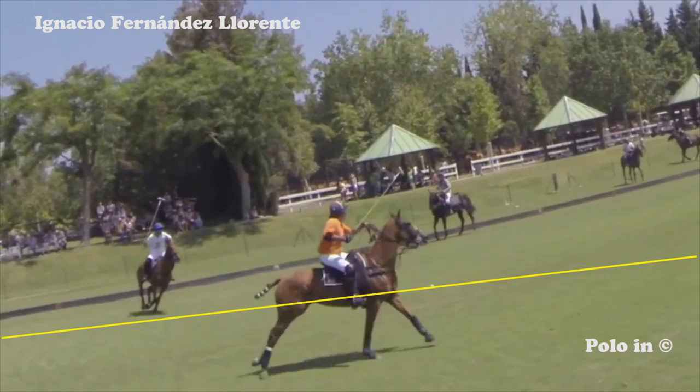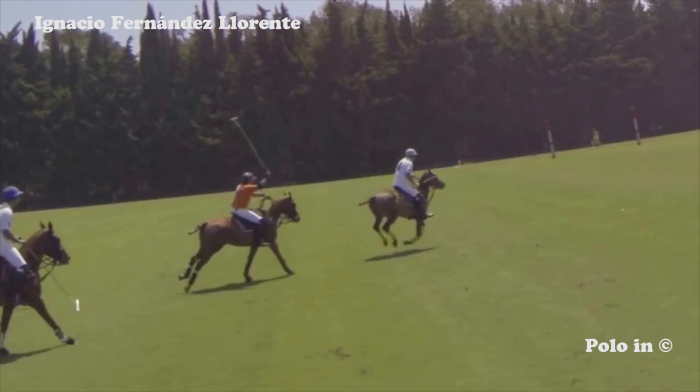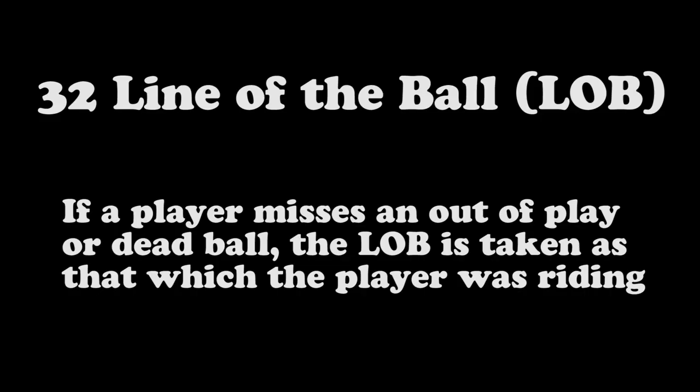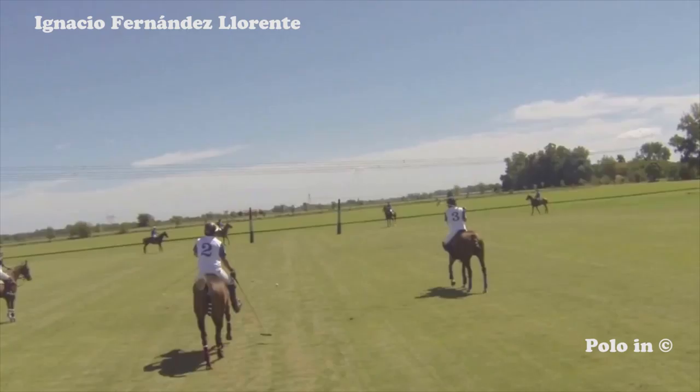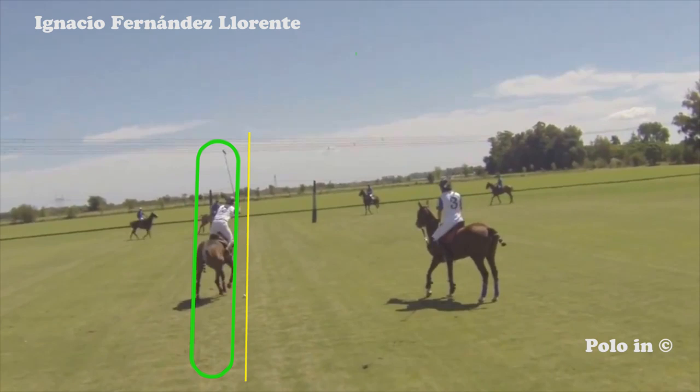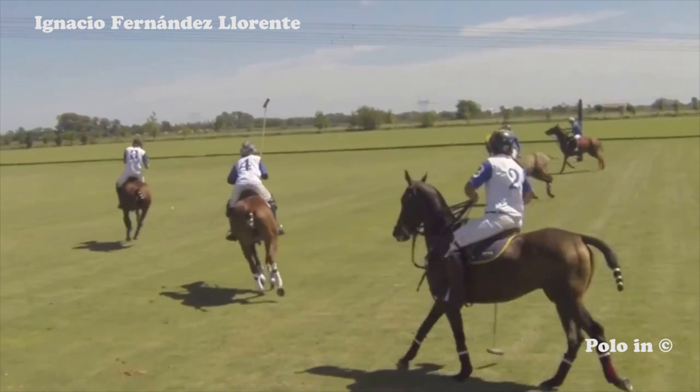The line of the ball, or lob, is extremely important — even more than the path of the horses. The path of the ball is a dividing line, leaving players either on one side or the other. Crossing it must be done with caution. If a player misses an out-of-play or dead ball, the lob is taken as that which the player was riding. And when there is apparently no line because the player starting the play misses his shot, the line is the path of his horse. Only in this case will the path of a horse determine the lob.